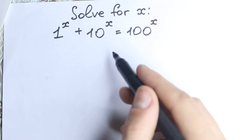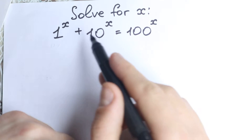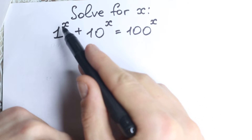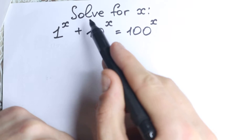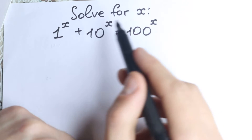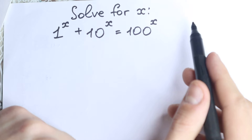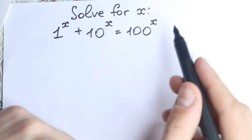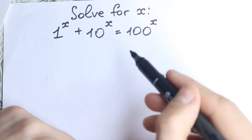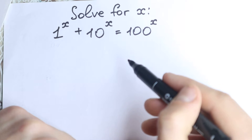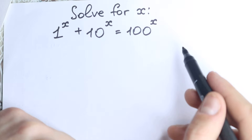On the first sight this is a very hard equation — we have all different bases, every time with x in the exponent. So 1 to the x, 10 to the x, 100 to the power x — all different bases. But this equation is relaxing and a lot of students find really interesting rules here, so I hope you will enjoy my solution.